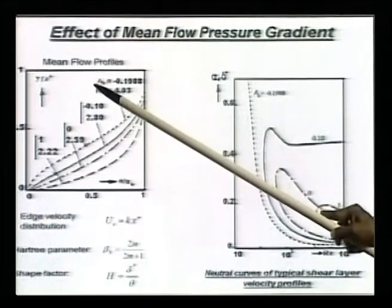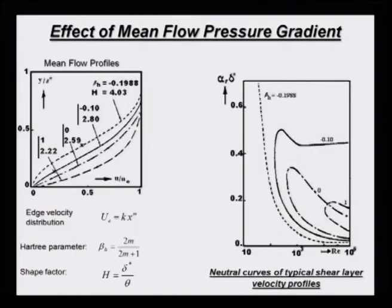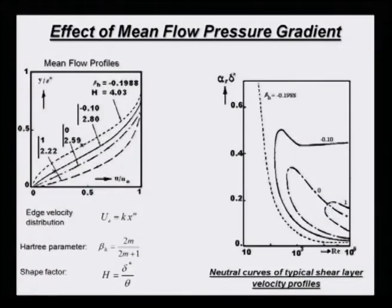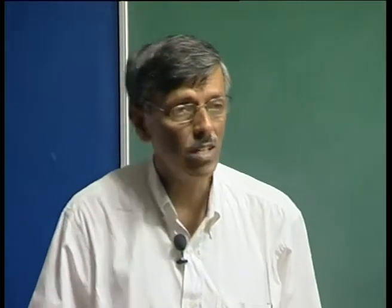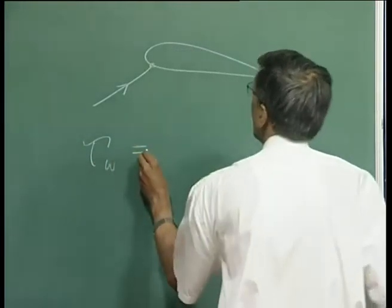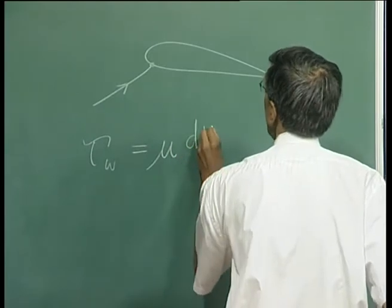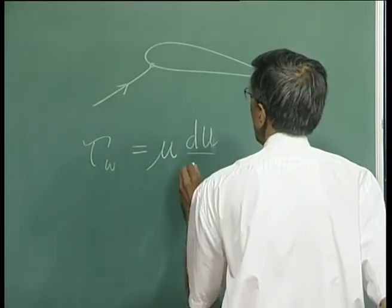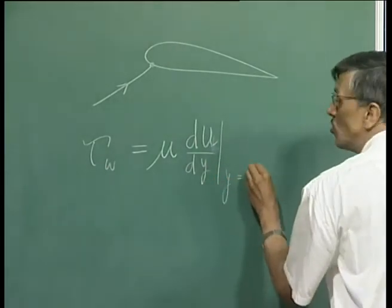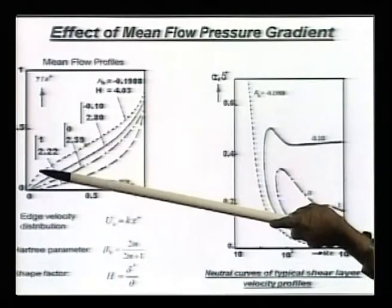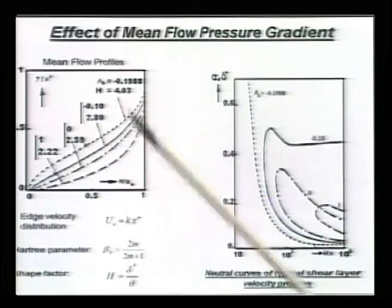This is the situation where the flow is about to separate. The behavior of the flow at the wall gives some indication of whether the flow is attached or separating. Recall Prandtl's condition: separation is indicated when the wall shear is equal to zero. Wall shear is given by tau_w equal to mu times du/dy at y equal to zero. That is what you are seeing in the last curve - this goes off tangentially. So this is a profile for incipient separation.